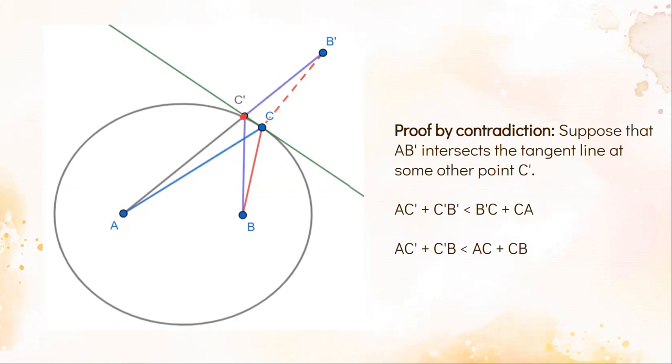We know by the triangle inequality that AB' is less than B'C plus AC. Splitting this up, we have AC' plus C'B is less than B'C plus CA.